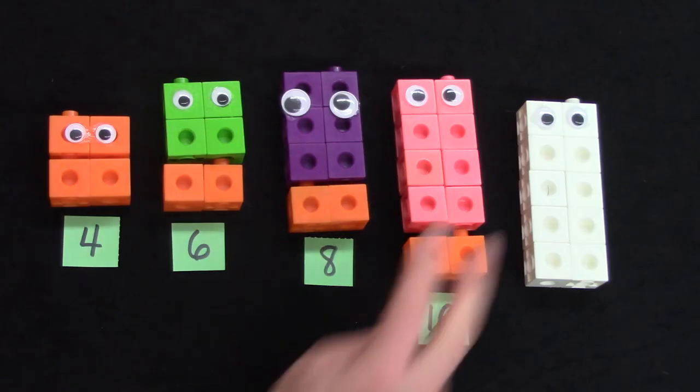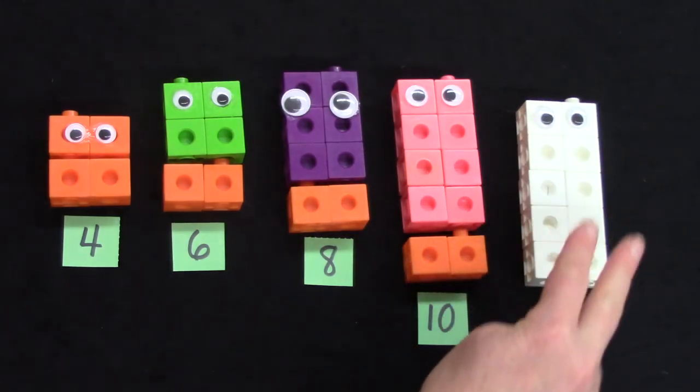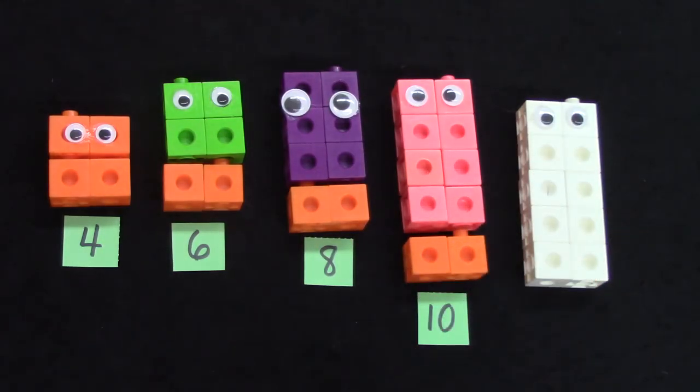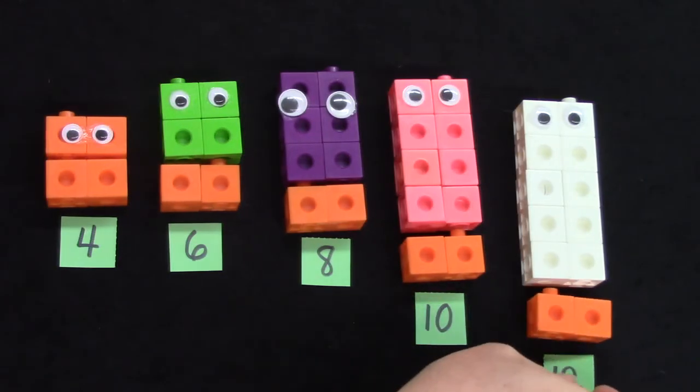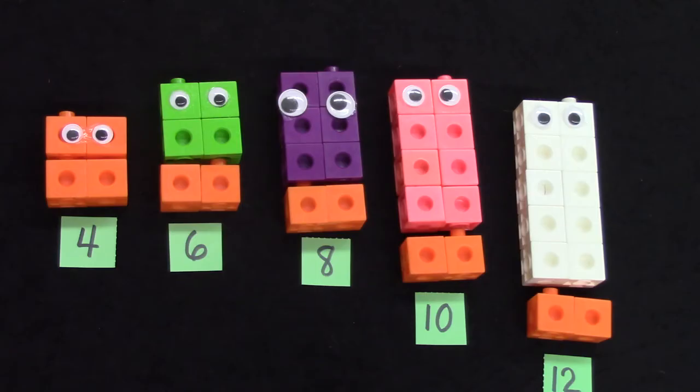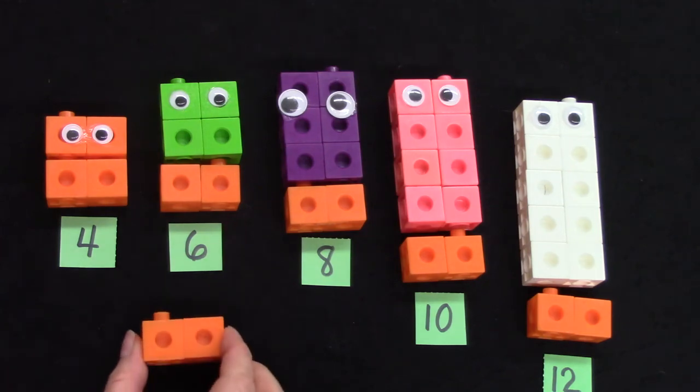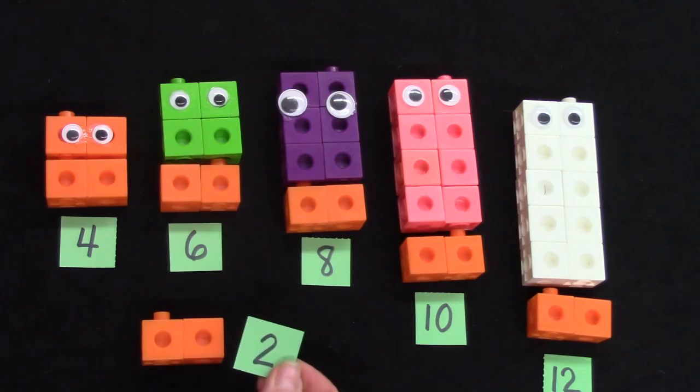If we have 10, 2, 4, 6, 8, 10, and we add 2 more, we'll have 12 snap cubes. What if we don't have any snap cubes and we just add 2 snap cubes to nothing? Then we have 2.